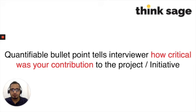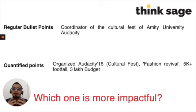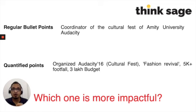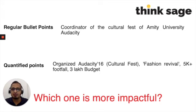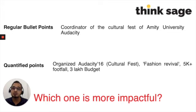Here's an example: a regular person would say they are a coordinator of an event — and that's it. But if you say you coordinated an event attended by 10 people versus one attended by 5,000 people, there is a difference. Managing 5,000 people shows you have done something significant. So if you quantify this bullet point — for example, 'organized an event with 5k+ footfall and a 3 lakh rupees budget' — it shows you can manage people and be trusted with spending 3 lakh rupees judiciously. You become a real asset.